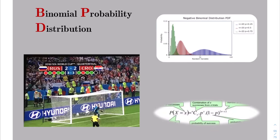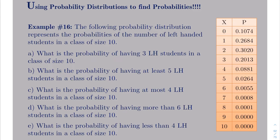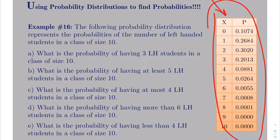At the end of working on calculating the expected value and variance of probability distributions, we came across example number 16, where it said: find the probabilities given this following probability distribution. If this table is given to you and I ask you to calculate probabilities — say, what is the probability of having three left-handed students? — all you have to do is find three left-handed students, look at the probability in front of it, and that's the answer. It's really seamless to answer probability questions once you have this table.